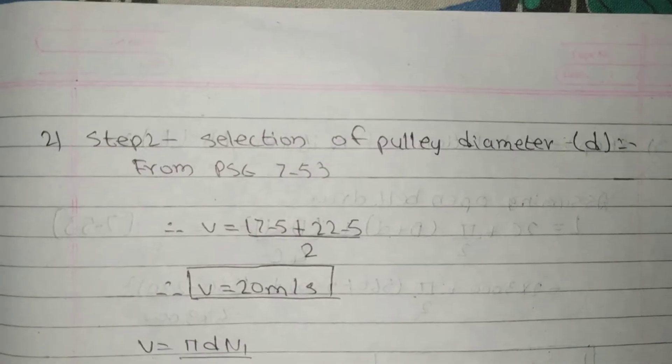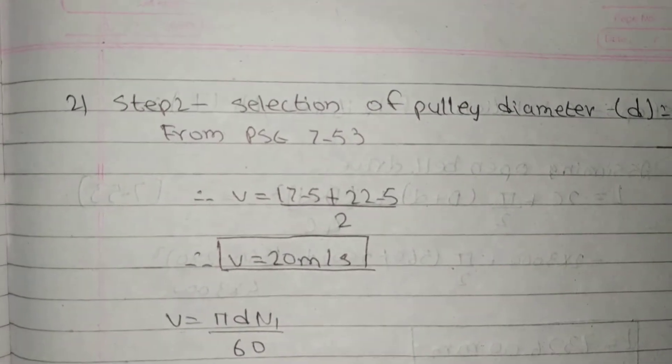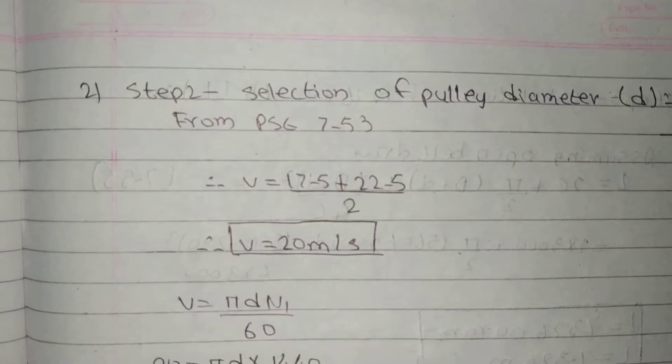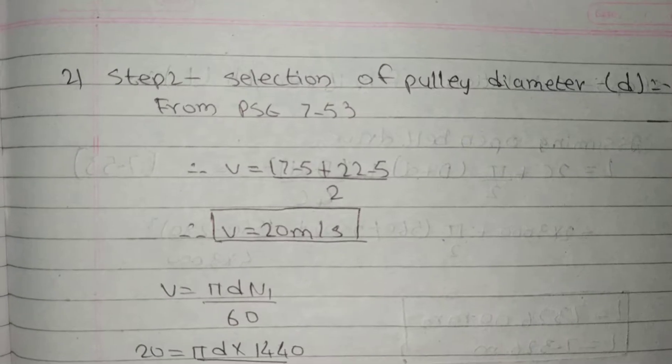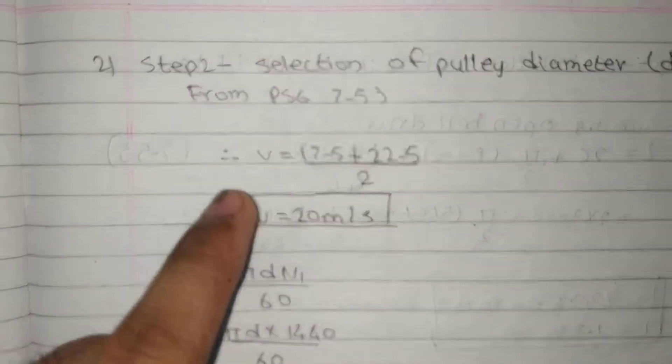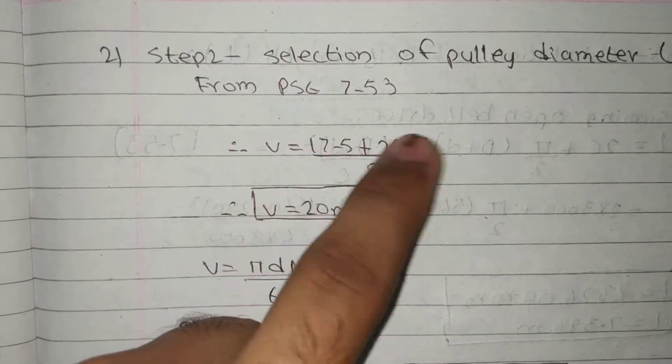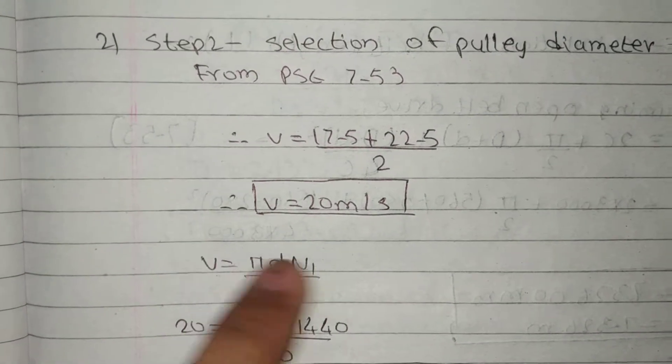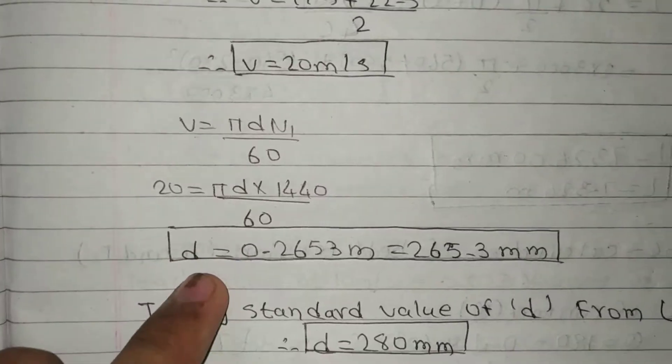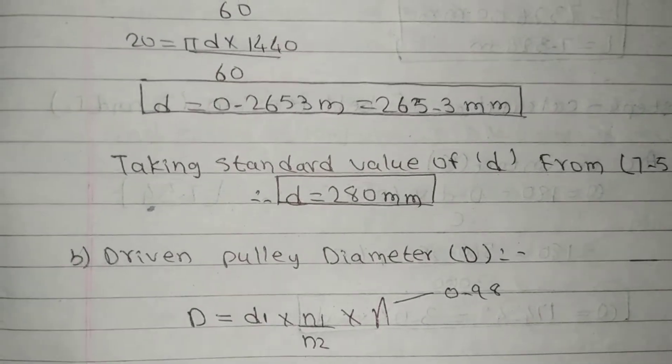Step 2: Selection of pulley diameter small d from PSG 7.53. Selection of pulley diameter D in 7.53, formula is called V condition, 17.5 to 22.5. So V is 20 meter per second, V is pi D N1 upon 60. This is D. Taking standard value of D from PSG 7.54.